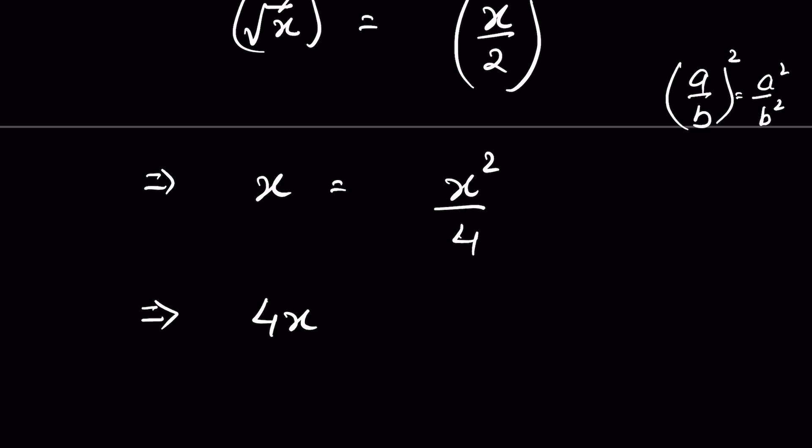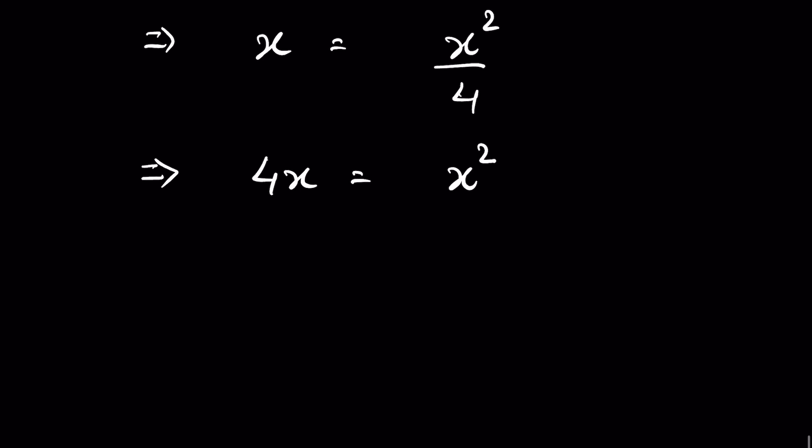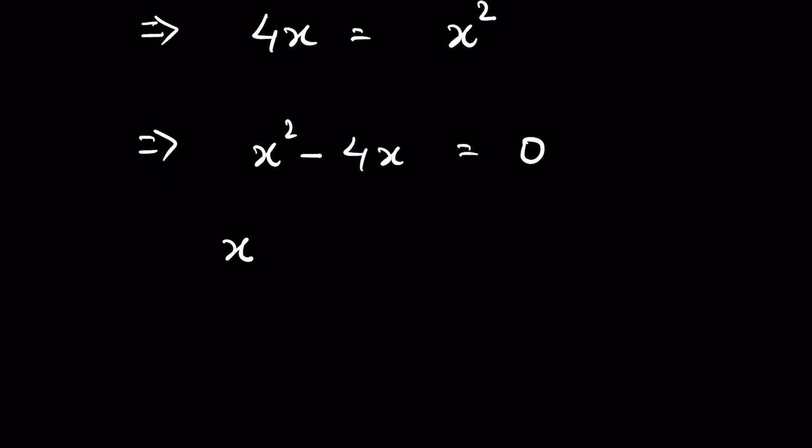So it is 4x equals x squared, or we can write x squared minus 4x equals 0. We can take x common here. So x times (x minus 4) equals 0.